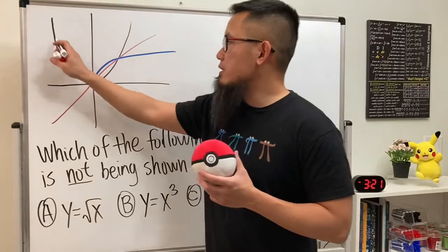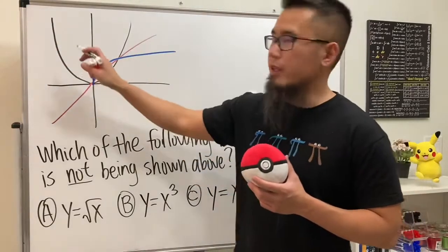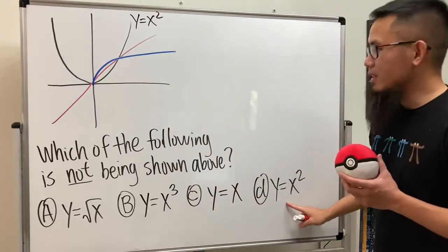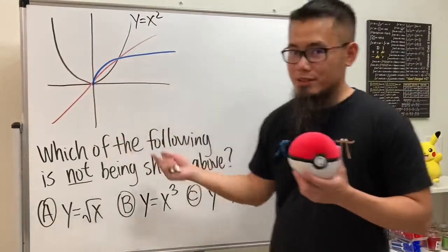Right here, this is just a parabola, and the equation for that is y is equal to x squared. So, this equation is actually right here. That's good.